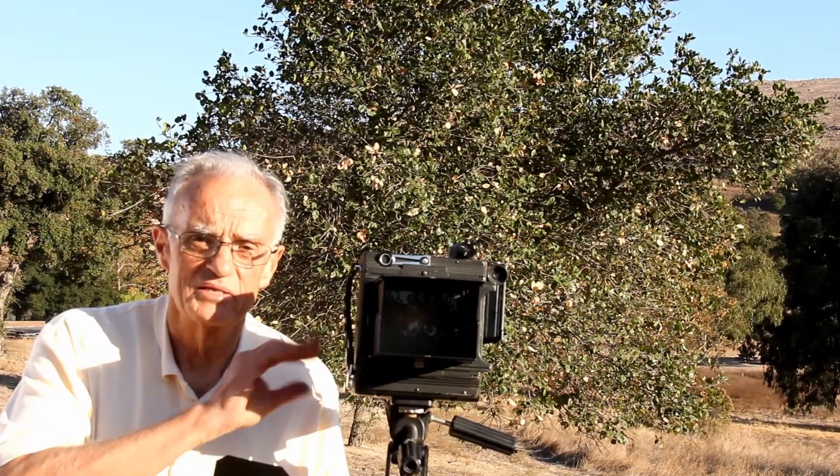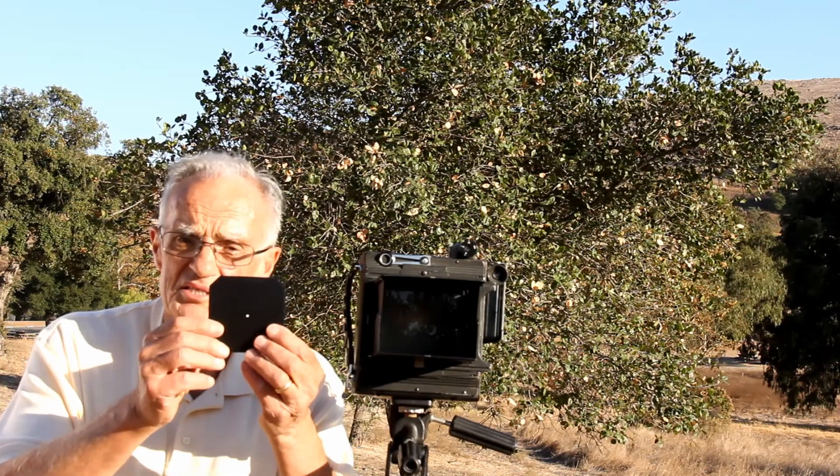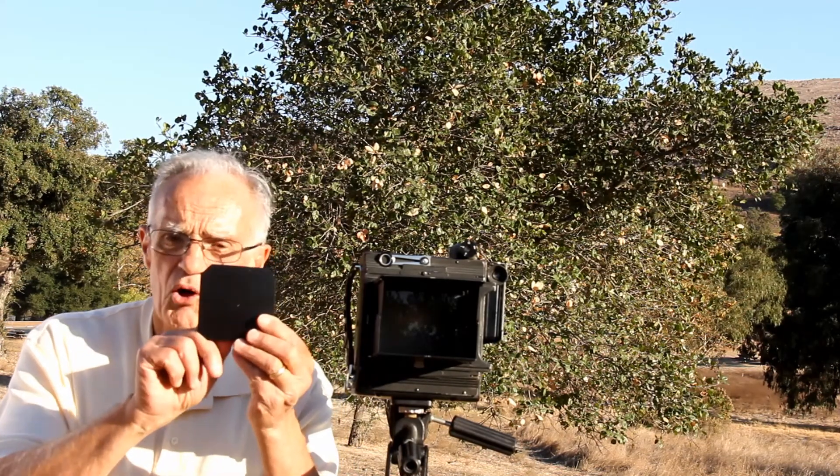I'm going to take out the lens and put in its place a piece of plastic with a very small hole drilled in the middle. Even without the lens the camera shows an image. The image is dim because the pinhole admits very little light. The image is also blurry because rays from a point in the scene form a cone that falls on the ground glass.